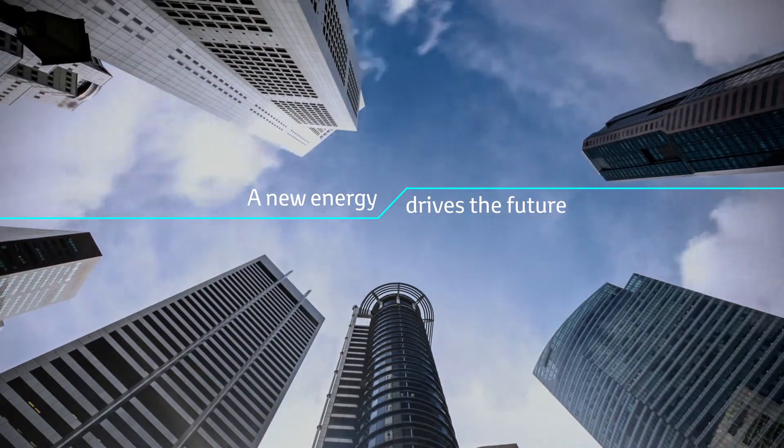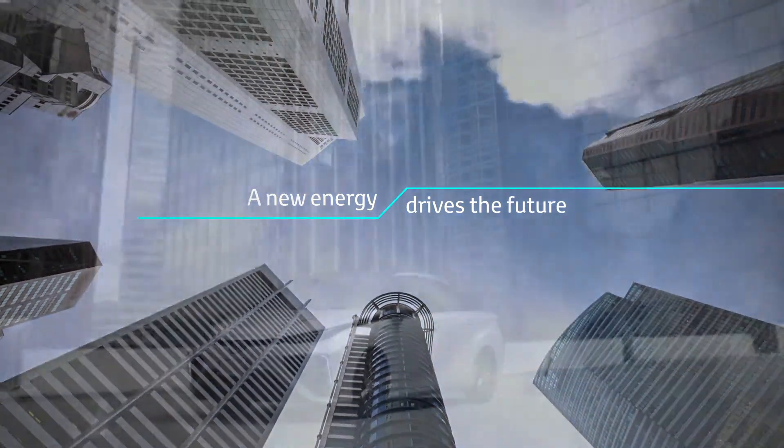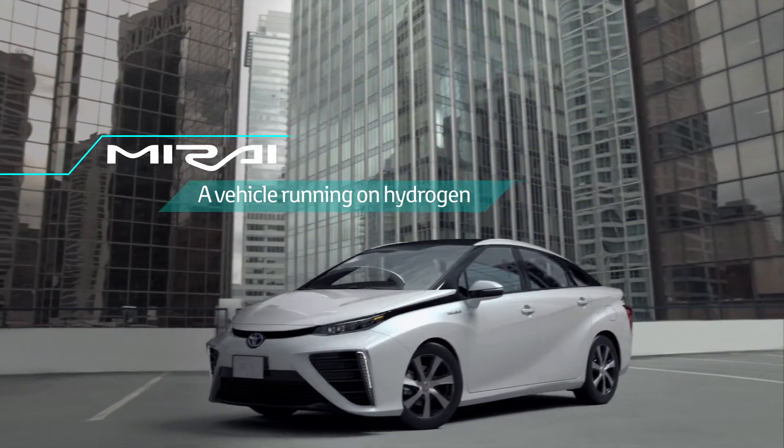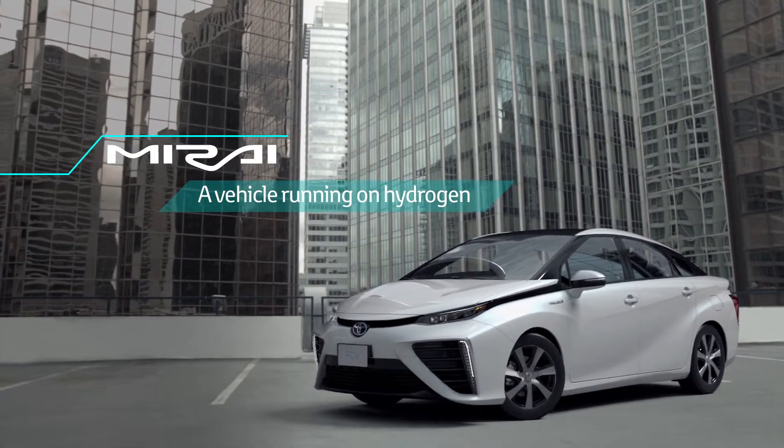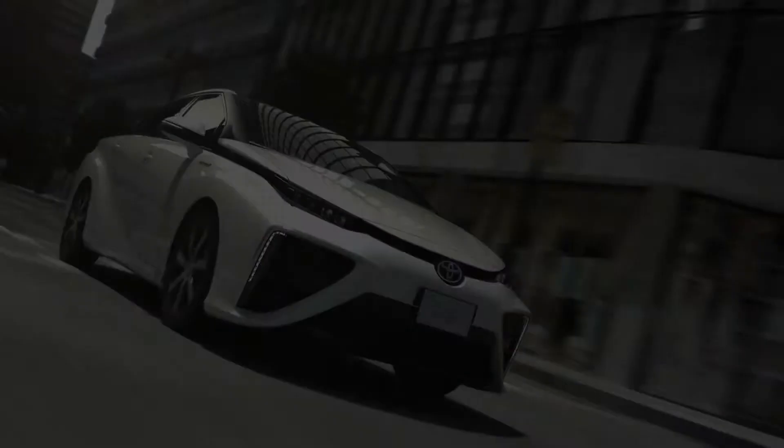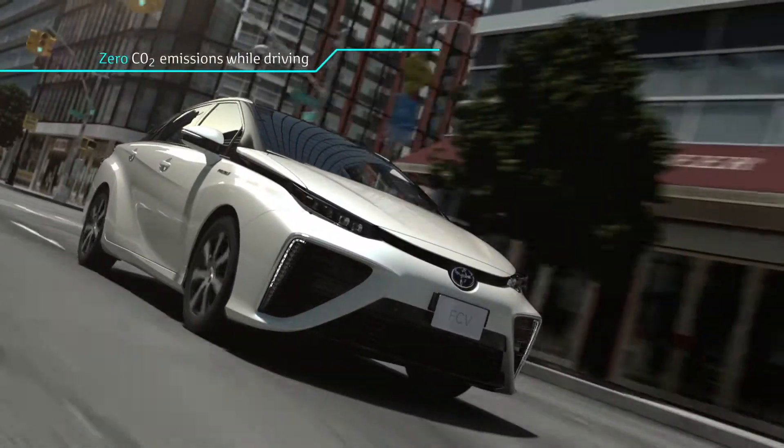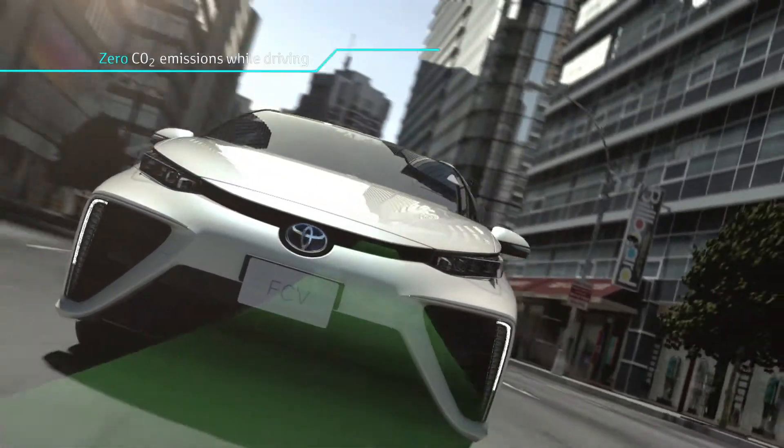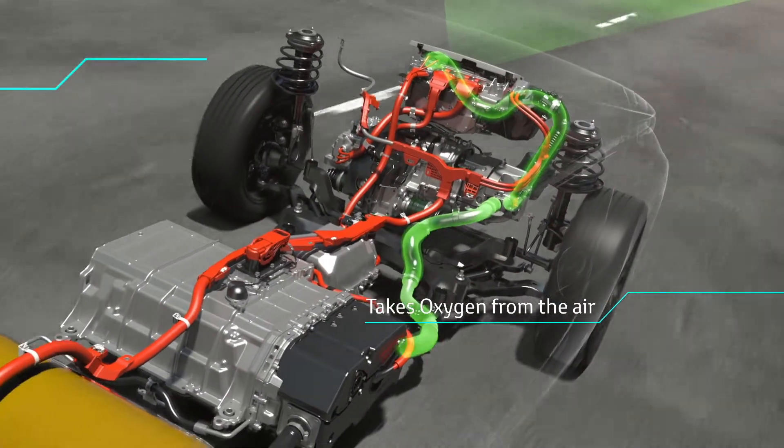Introducing Toyota's revolutionary new fuel cell system for the FCV. The FCV's fuel cell generates power which is created from hydrogen and oxygen. Hydrogen, an alternative fuel for gasoline, is a plentiful, environmentally friendly energy element that is created from a wide range of sources.